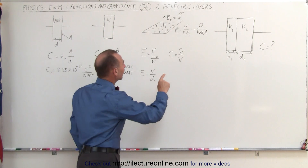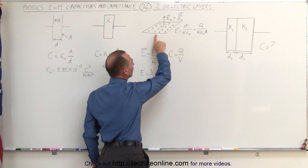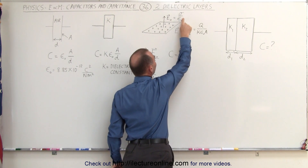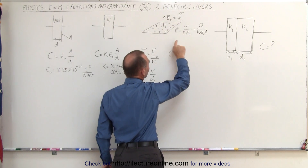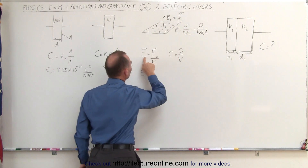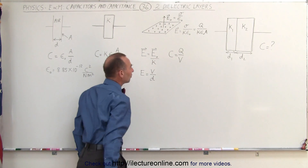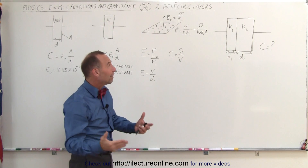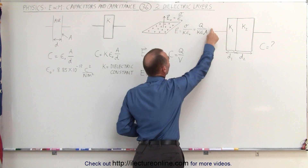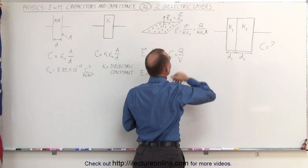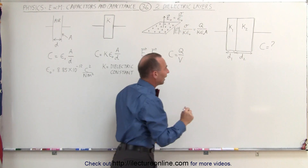One more thing we need to know: the electric field away from a charged plate can be calculated as the charge density per unit area divided by epsilon sub nought, or if there's a dielectric on top of that, then we divide by K as well. The electric field is being diminished by the dielectric constant. If we define the charge density as total charge per unit area, we can also write the electric field in that form. I should put absolute value signs around it because we're giving the magnitude.